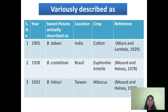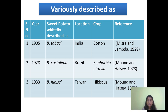Bemisia tabaci is commonly known as the sweet potato whitefly, tobacco whitefly, or cotton whitefly. It was found on cotton crop in India in 1905. It was described as Bemisia costalimai, found in Brazil on Euphorbia utala in 1928. In 1933, it was described as Bemisia hibisci, found on hibiscus crop in Taiwan.